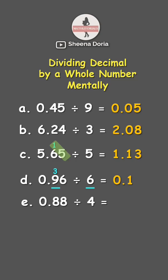Then, let's get the remainder 3 and 6 side by side to each other. That's 36 divided by 6, which is 6. Our answer is 0.16.